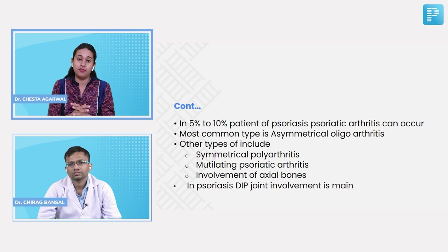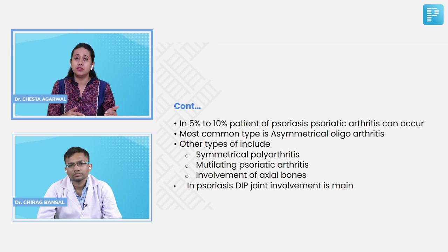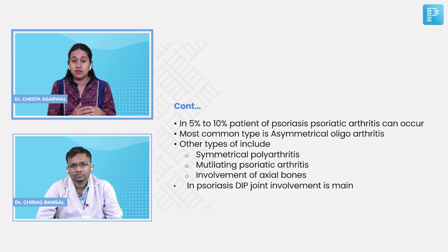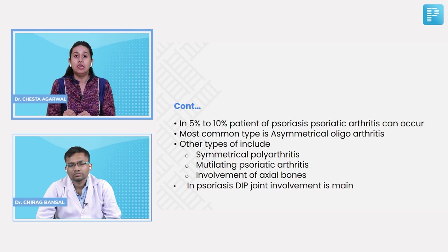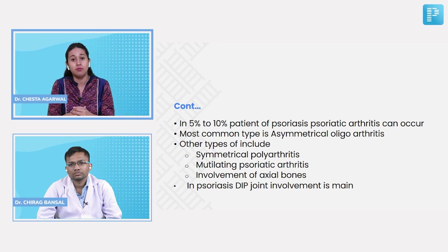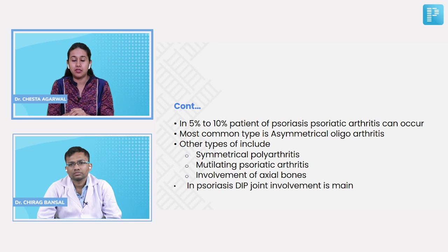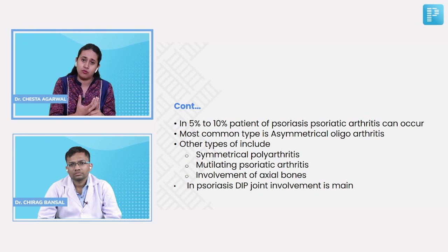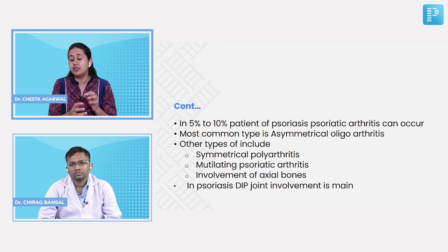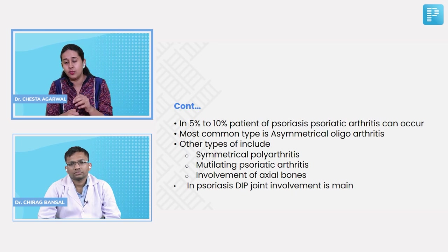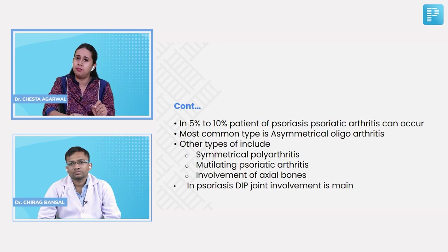Psoriatic arthritis is a very disabling type of arthritis with different variants. The most common is asymmetrical oligoarthritis. Others include symmetrical polyarthritis similar to rheumatoid arthritis, single DIP joint involvement, axial bone involvement with vertebral joint involvement, or the mutilating variety known as arthritis mutilans. Joint involvement may start after a long time after skin lesions appear or at the same time. In this patient, no joint involvement was found.